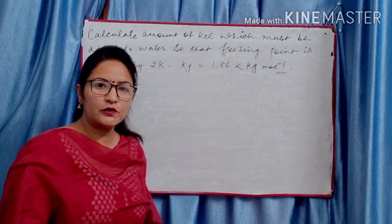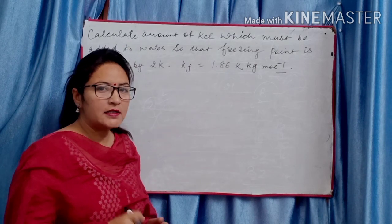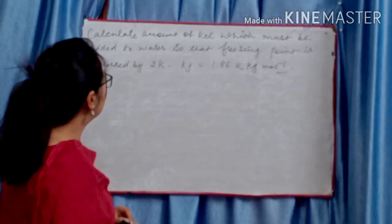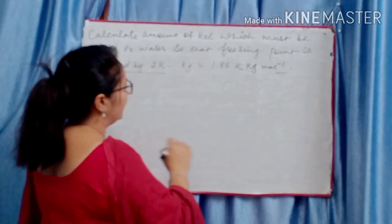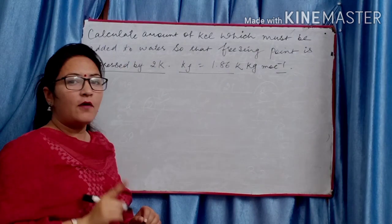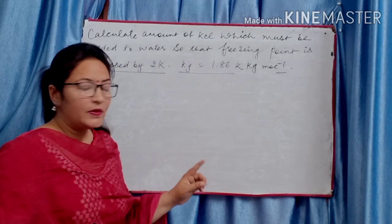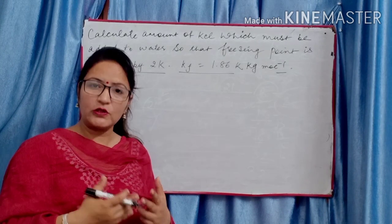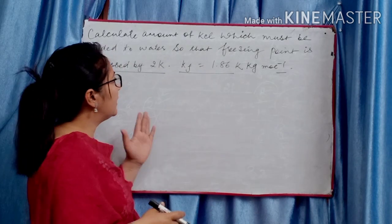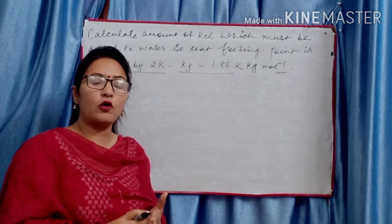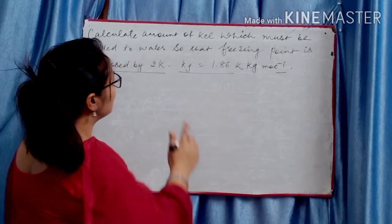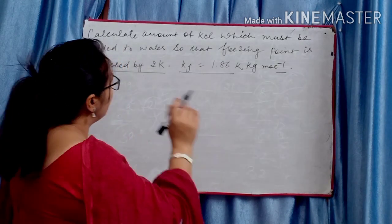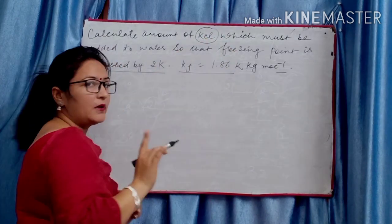Good morning students, today we will do numerical soft one. Calculate amount of KCl which must be added to water so that freezing point is depressed by 2 Kelvin, Kf given. A key point of Van't Hoff factor numericals is that the i value written in the question indicates degree of dissociation or association. Since no such value is given here, KCl is completely dissociated.